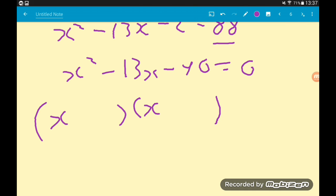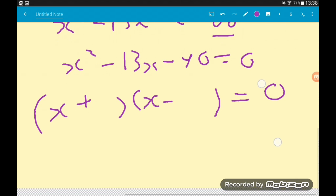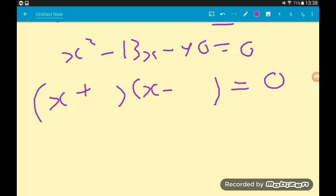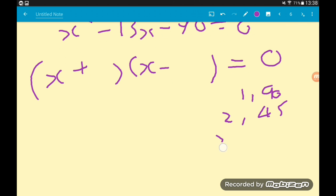The fact that they multiply together to minus 90 tells us one number is going to be positive, one number is going to be negative. So we need two numbers that multiply together to give us 90 that have a difference of minus 13. Let's go through multiples of 90: we've got 1 and 90, 2 and 45, 3 and 30. Does 4 go into 90? No.